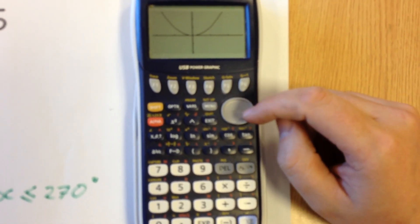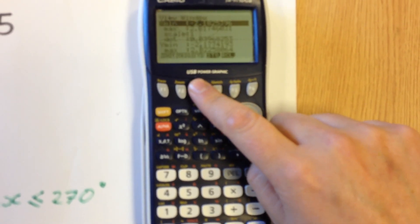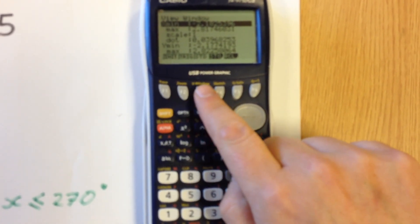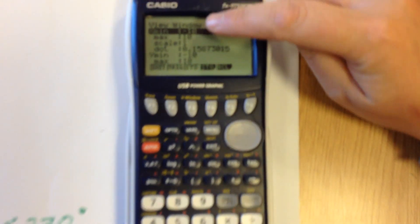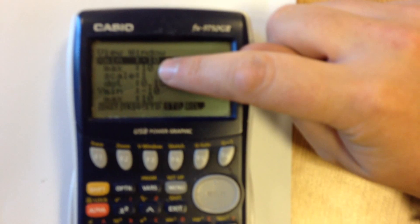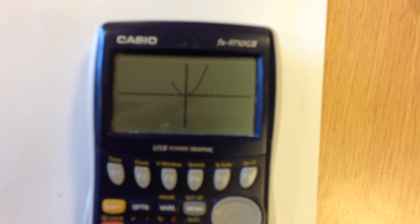Now that just looks like a normal x squared graph, so what I'm going to do is I'm just going to click on V window and I'm going to change it to the standard x and y axis. What that's doing is it's going from minus 10 to 10 on the x axis and I think if we do that, we should see a little bit better of what's going on.